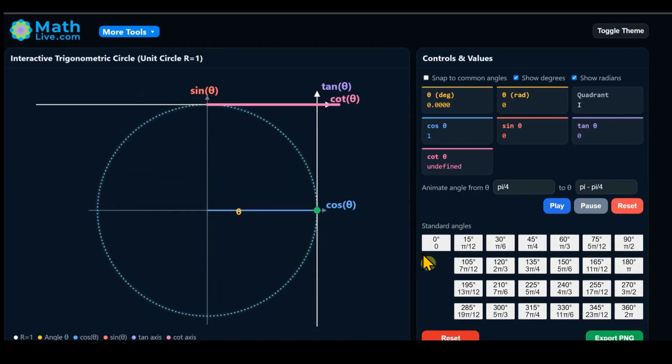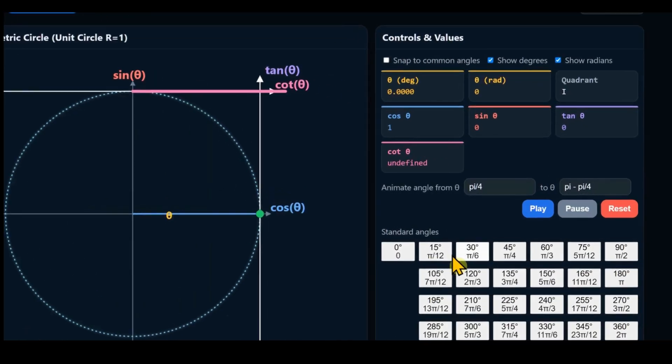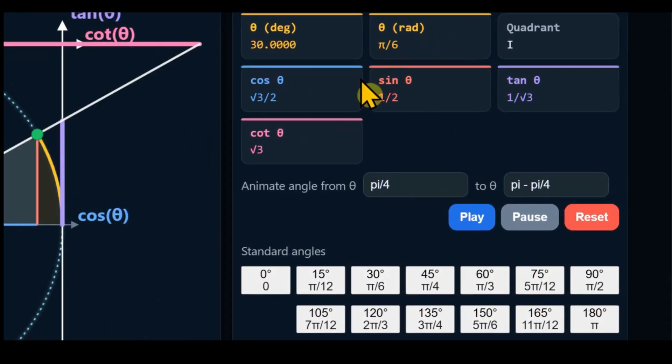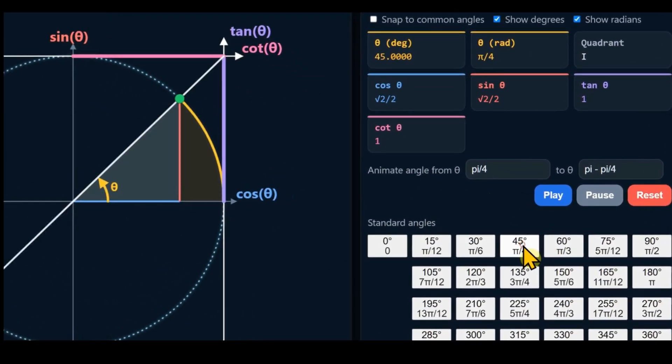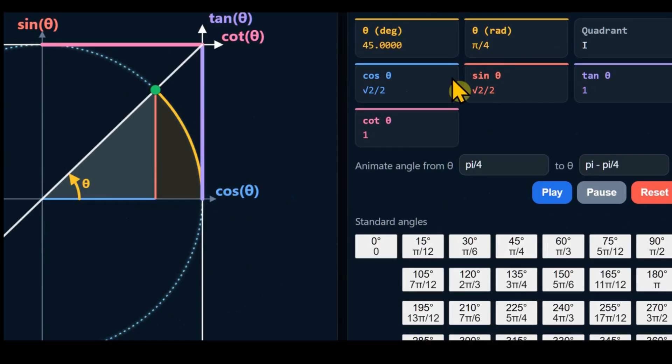At zero degrees, the sine is zero. At thirty degrees or pi over six, the sine is one half. At forty-five degrees or pi over four, the sine equals square root of two over two.